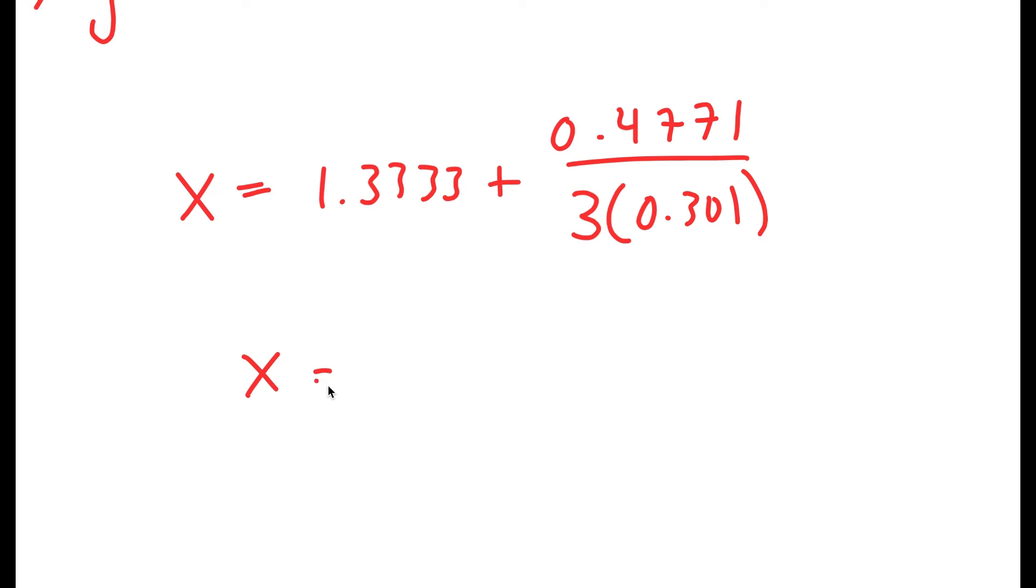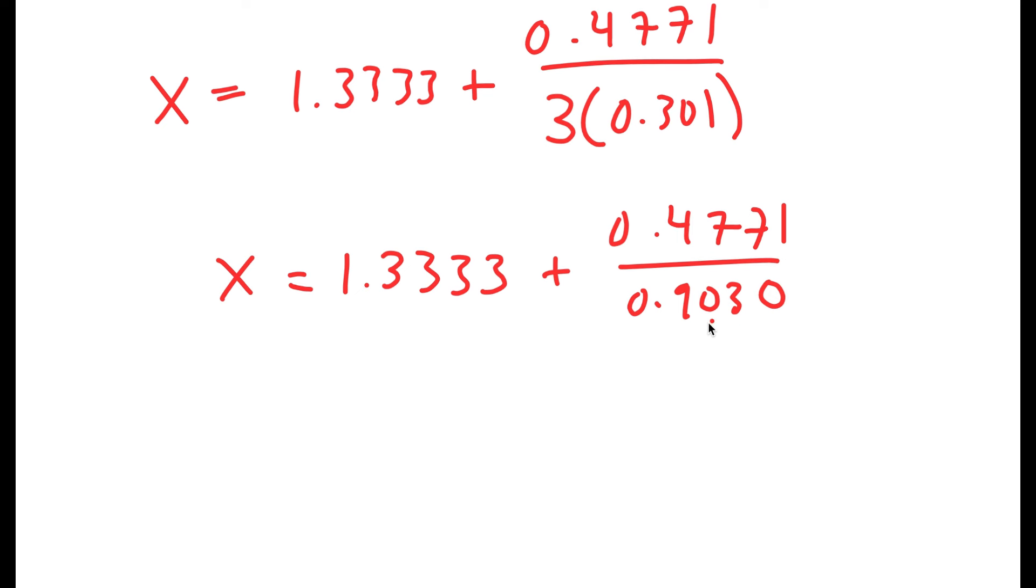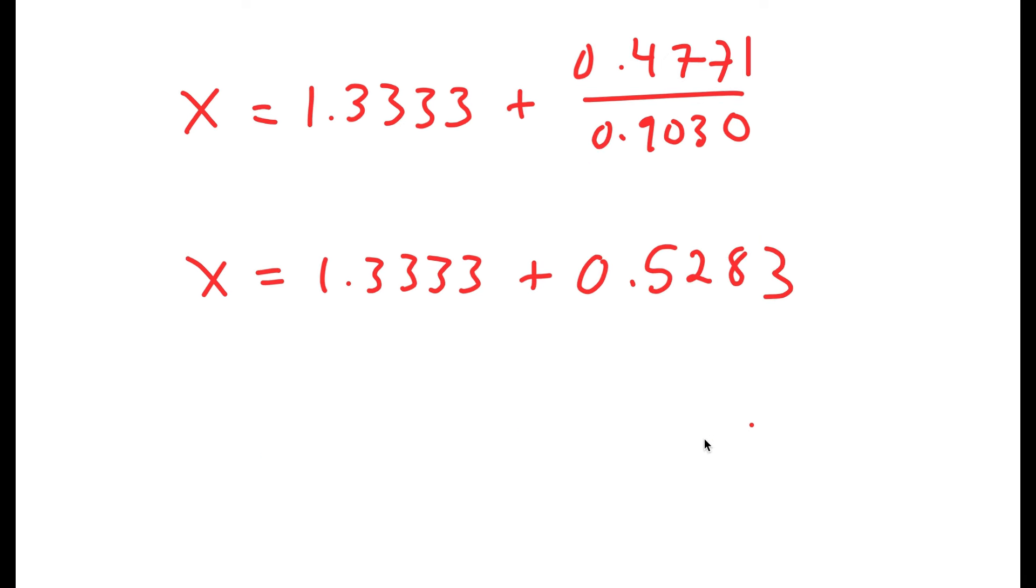So now I get x equals 1.33333 plus 0.4771 over 3 times 0.301. So now this is equal to 1.33333 plus 0.4771 over 0.9030. And 0.4771 divided by 0.9030 is equal to 0.5283. So I get x equals 1.33333 plus 0.5283, which is equal to 1.8616.